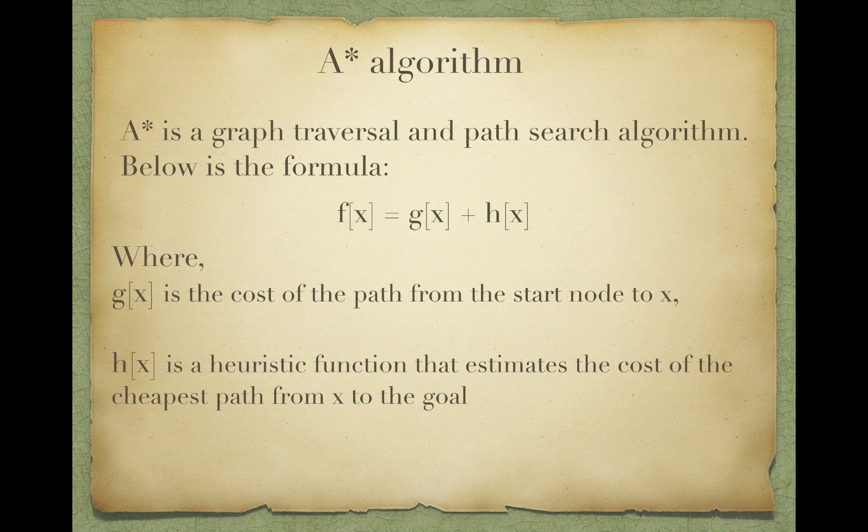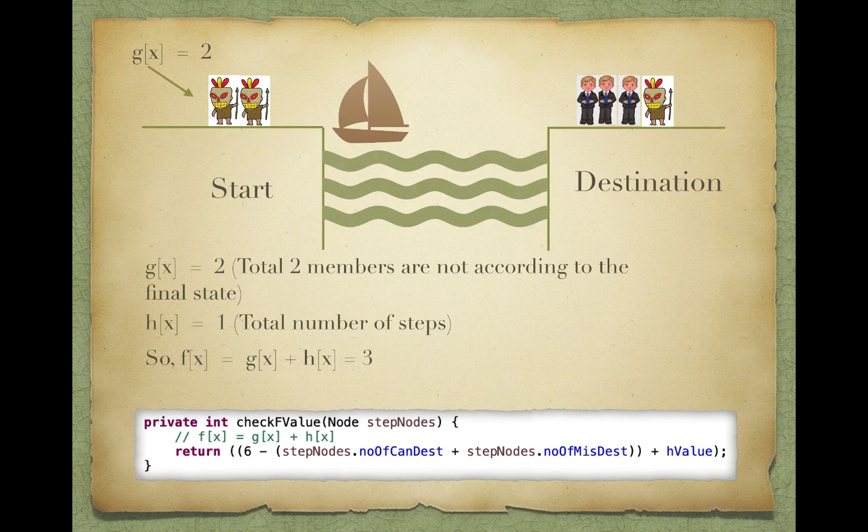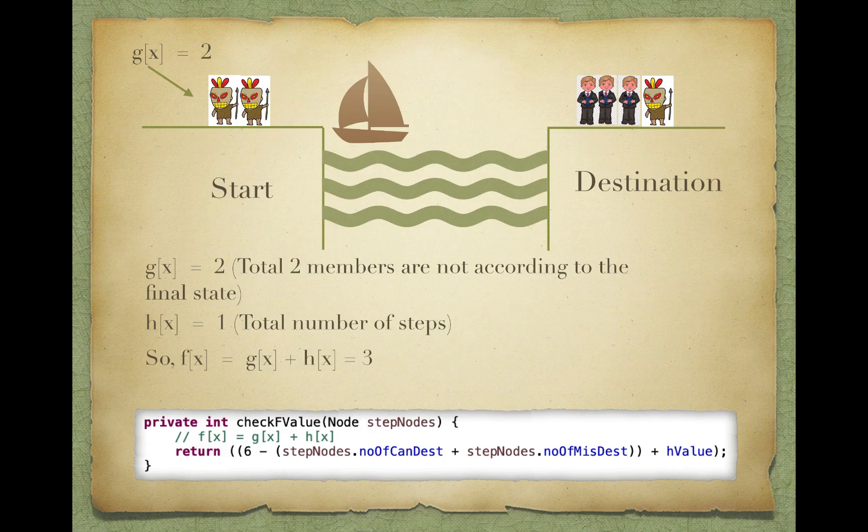Now let's see this with an example. This is one of our steps from the plan we are going to follow. In this step, as you can see, we have two cannibals at the starting position and three missionaries and one cannibal at the destination.